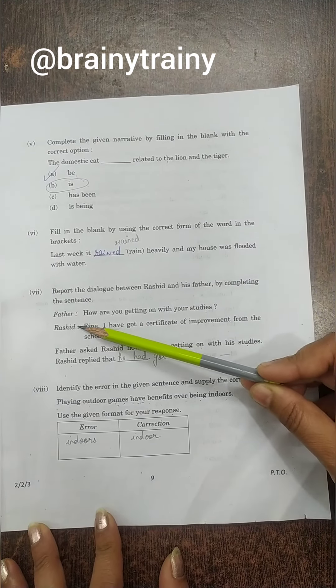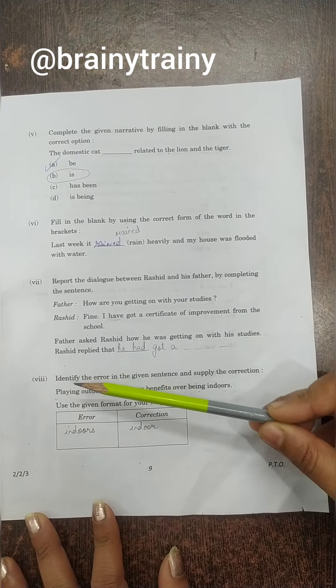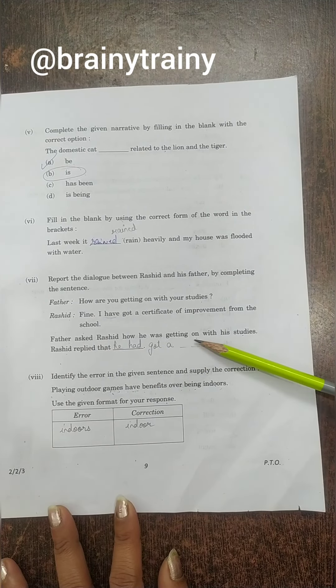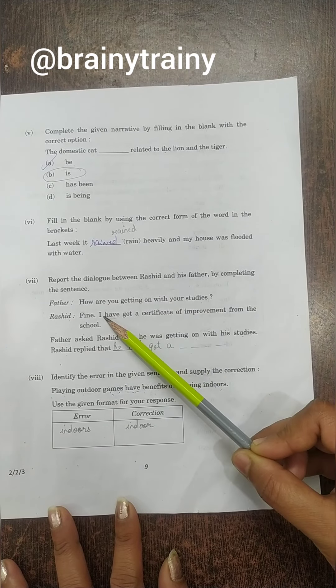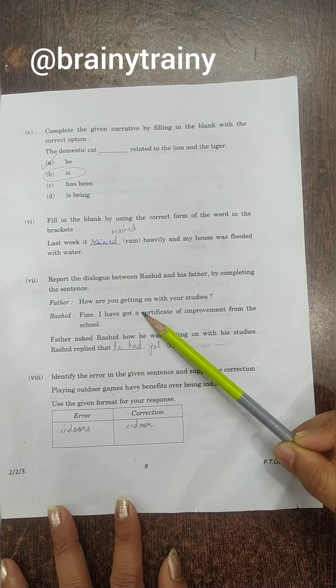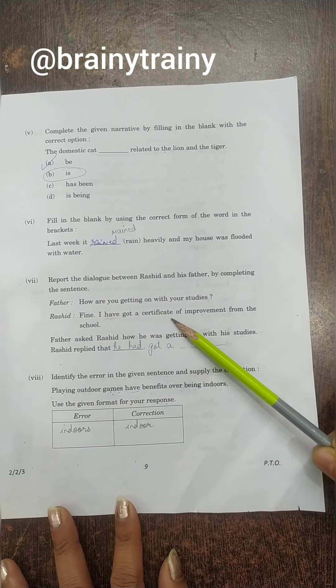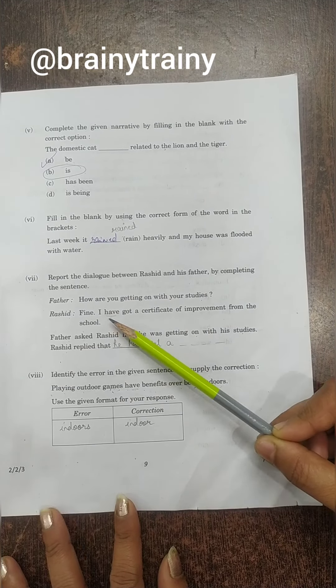Next dialogue narration: There are father and Rashid's dialogues. Father asked Rashid how he was getting on with his studies. Rashid replied that - now he will go to the place in front of the sentence - he had got a certificate of improvement from the school.